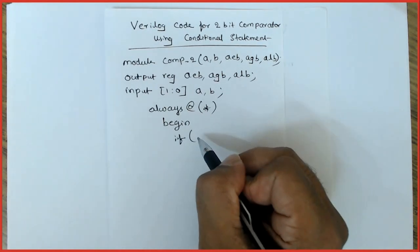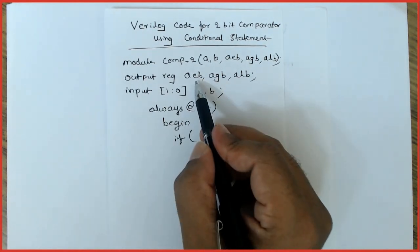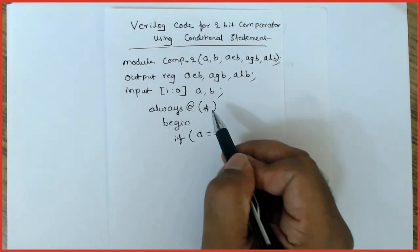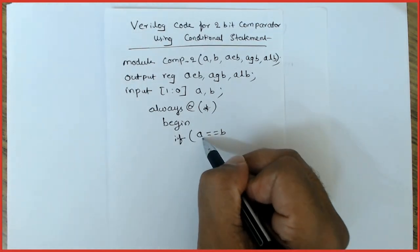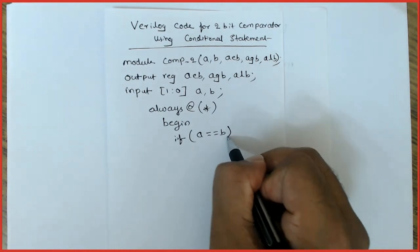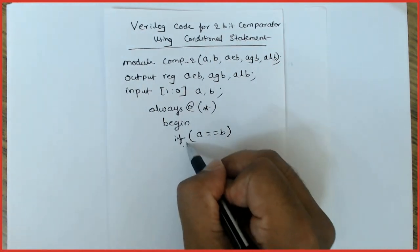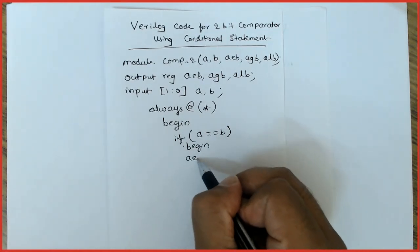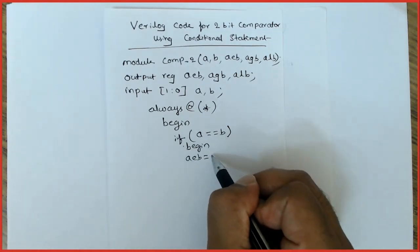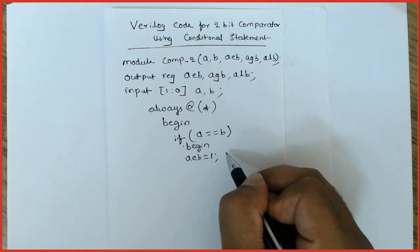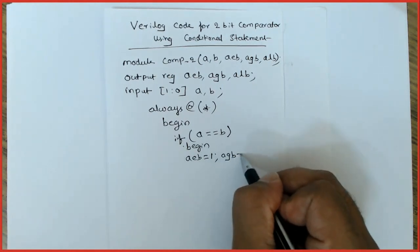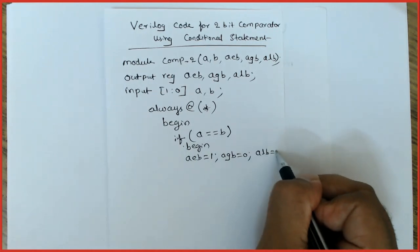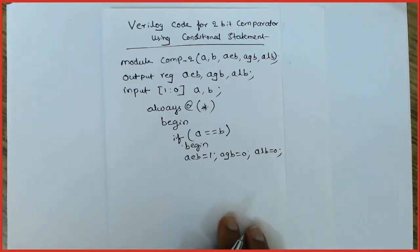If—first let's check the equality operator. So a is equivalent to b. This 2-bit value of a is compared with 2-bit value of b. Begin—you can write it here because I'll have multiple statements. aeb will be 1, assigned with 1, and the other two will be assigned with 0. This is how it goes.